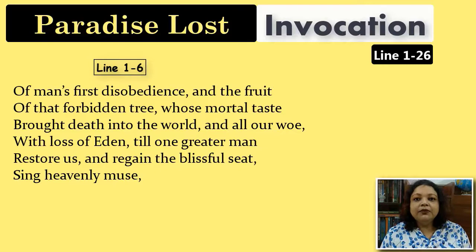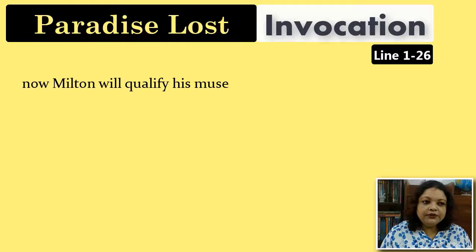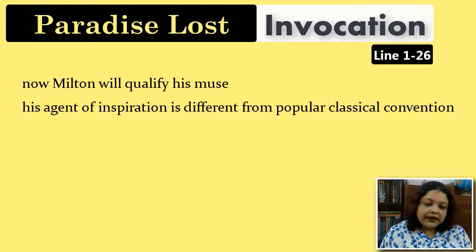Milton is qualifying his muse because, unlike classical poets who simply name their muses whose characteristics are already known, Milton is talking about a different kind of agent of inspiration. Therefore he needs to give us information about this muse. He tells us that on the secret top of Oreb or of Sinai, this muse did inspire that shepherd.